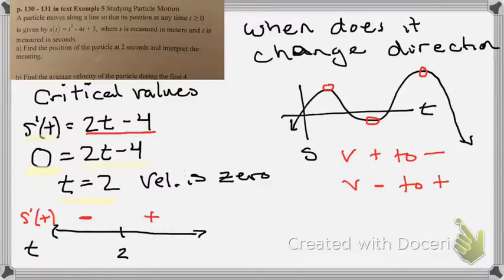Which means at a time of 2, the velocity went from being negative, or the person moving leftward, to the velocity is now positive. So that means that the particle changed directions at a time of 2.